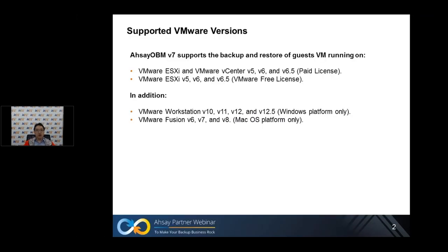Let's start with supported VMware versions. ASL VMv7 supports backup and restore of guest VMs running on VMware ESXi and vCenter v5 all the way to 6.5 for paid license keys, and VMware ESXi 5 to 6.5 for VMware free license keys. We also support VMware Workstation version 10 to 12.5 on Windows platform and VMware Fusion 6 to 8 on Mac OS platform. But today we'll be focusing on VMware ESXi and vCenter.